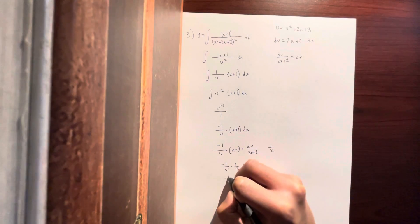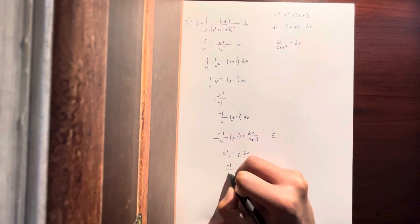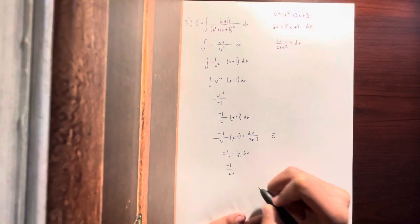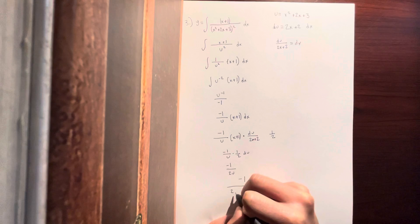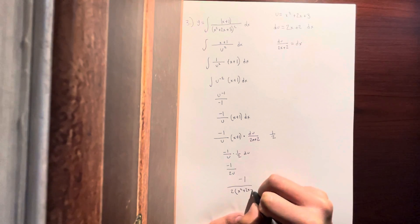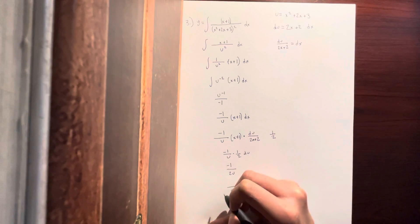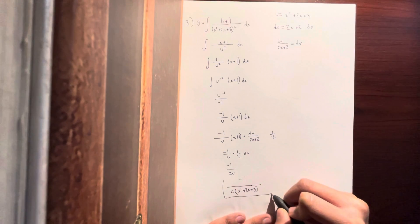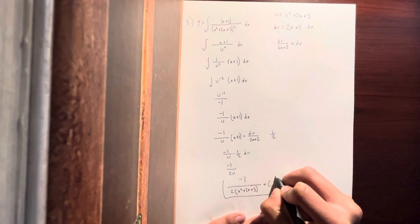You then finally plug in u again and you get -1/(2(x² + 2x + 3)). And that is our answer. Oh, plus c. And now that is our answer.